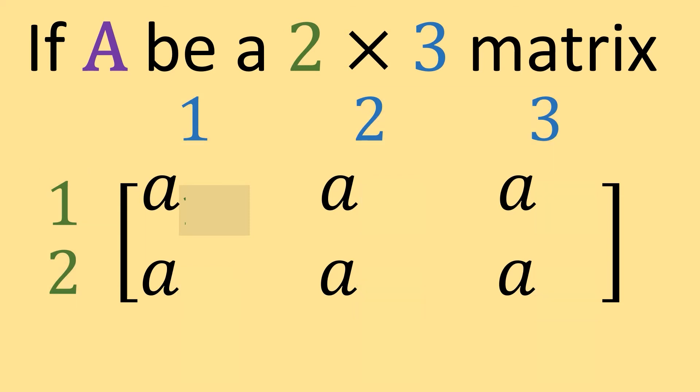So in this top left value, we're going to have the index of 1, 1, where the first number is the row, 1, and the second number is the column, 1.